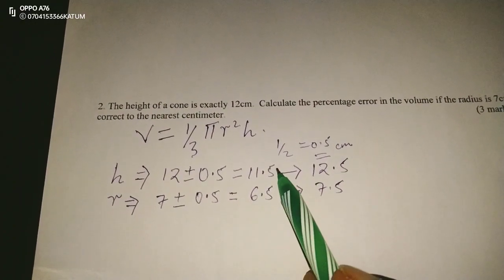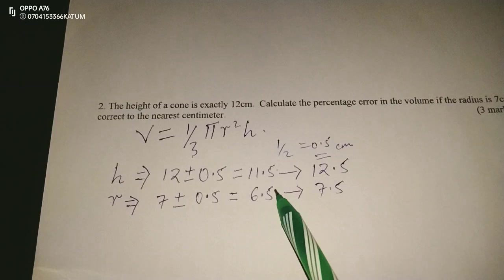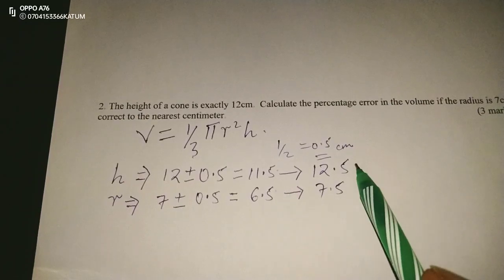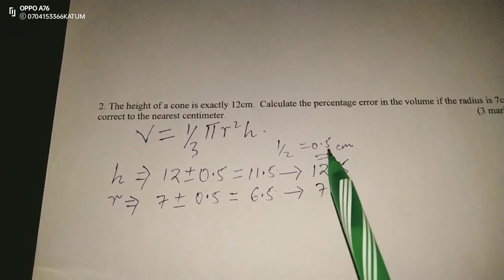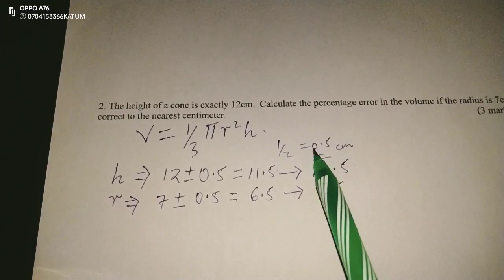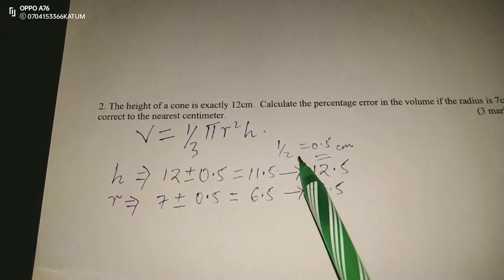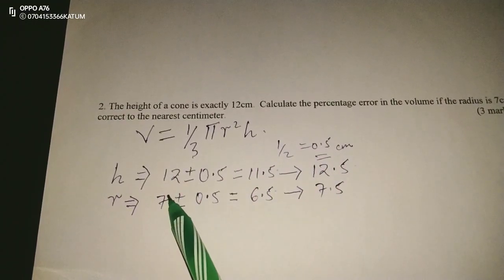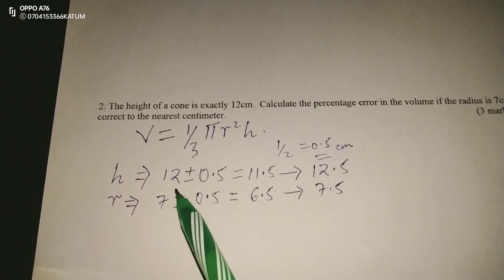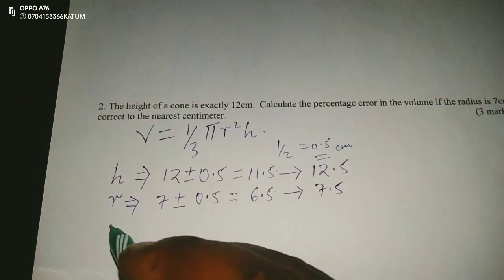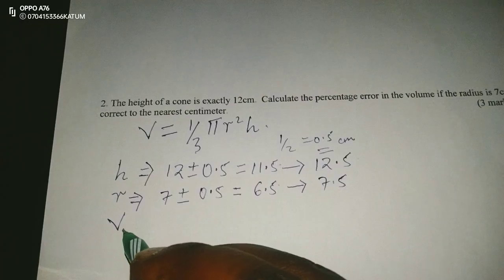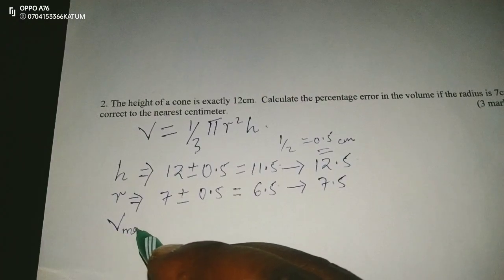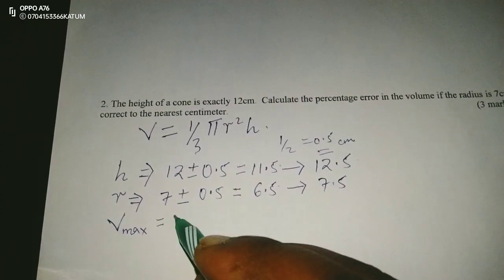So we have: minimum height, minimum radius, maximum height, maximum radius, and the working height and radius are 12 and 7 respectively. This means we can get the maximum volume, which is going to be given by one-third pi times the maximum radius squared times the maximum height.